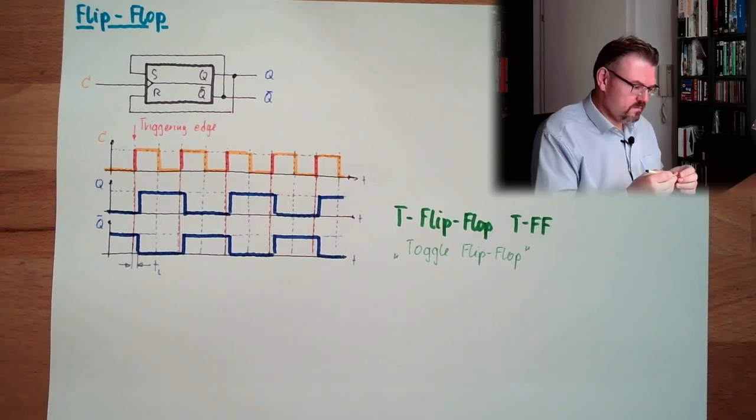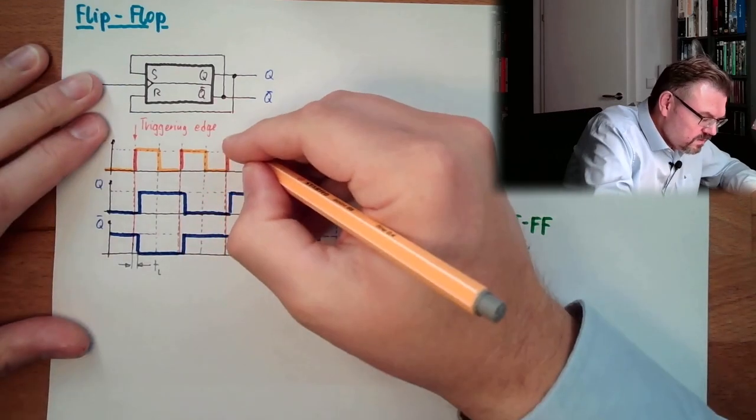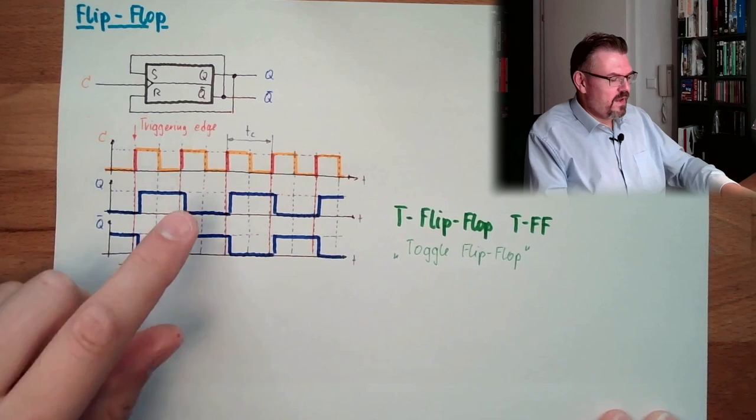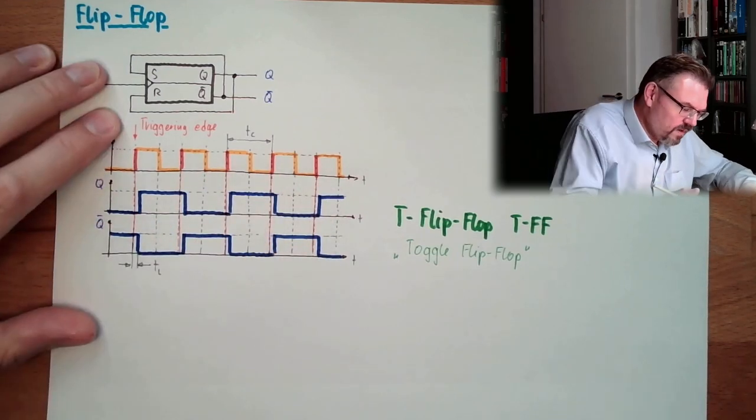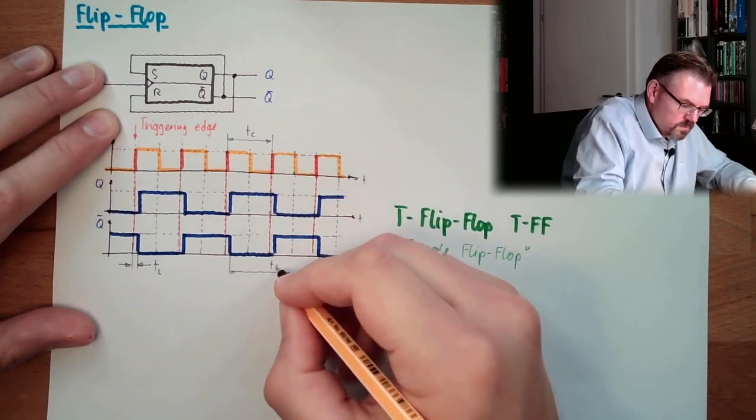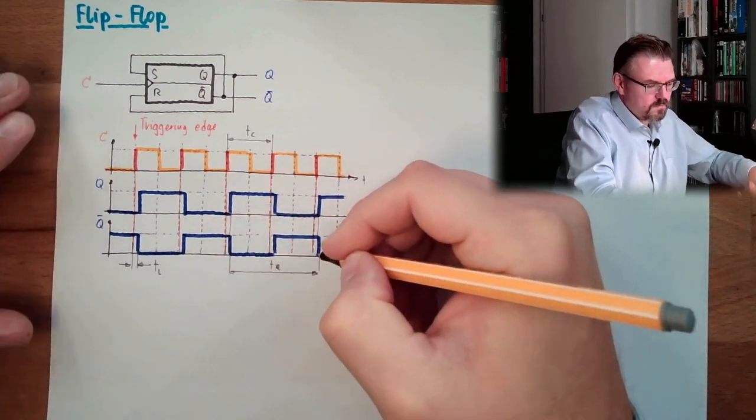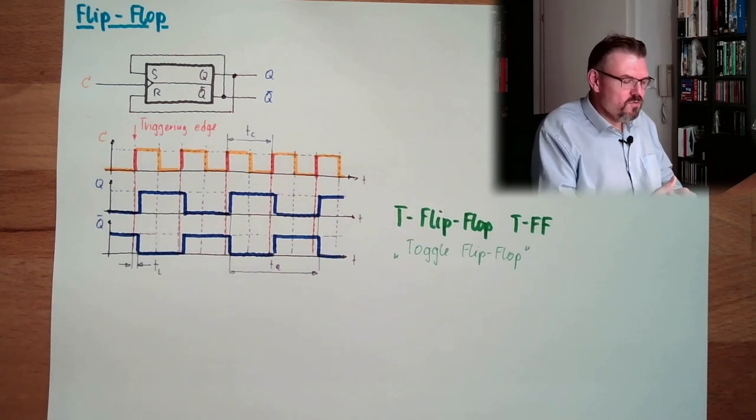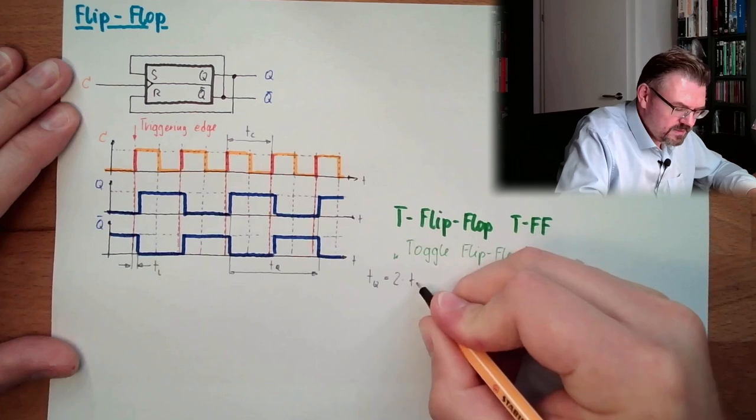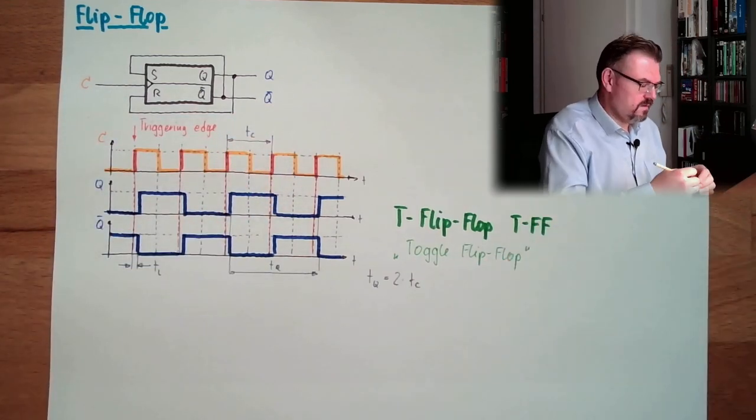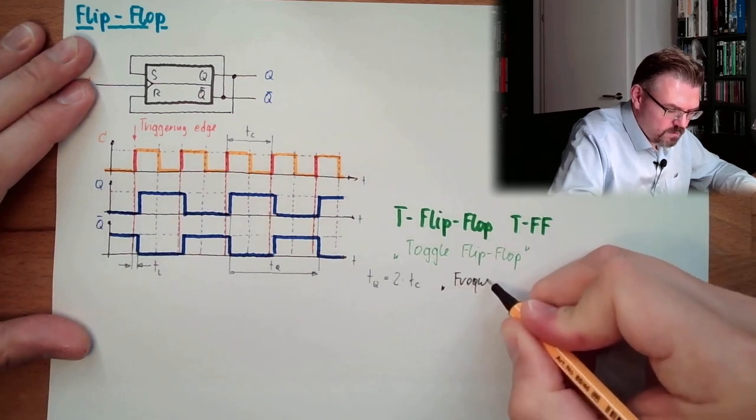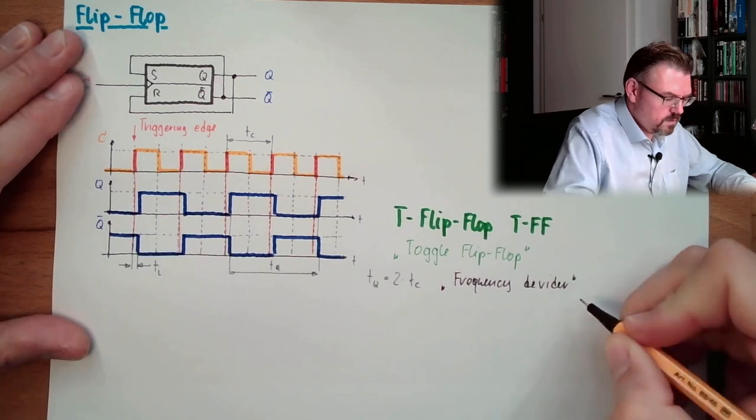And now let's have a look at the timing. Here we have the C input. This is a certain timing. So here we have a period time of Tc. And now, because every second is turning the output over, if we have a look at this period time, that's Tq. So Tq is 2 times Tc. So Tq equals 2 times Tc.